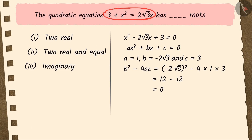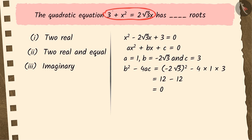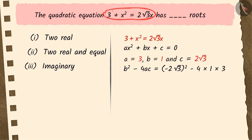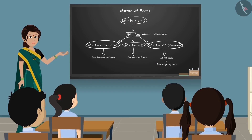Sushma solved the question correctly and found that the quadratic equation would have two real roots, but she forgot to mention whether those two real roots would be the same or different, which is why Sushma's answer, option 1, went wrong. Nandini found out the values of a, b, and c without writing the equation in its standard form, and solved the discriminant by substituting those values, getting a discriminant less than 0, and hence concluding that the quadratic equation will have imaginary roots. Therefore, Nandini chose option 3, which is incorrect. Teacher in the class can also test the understanding of students using such examples.